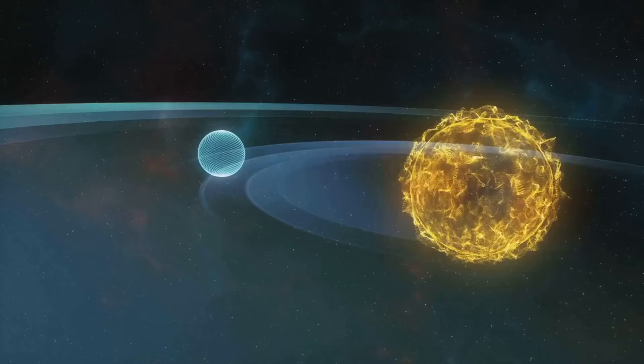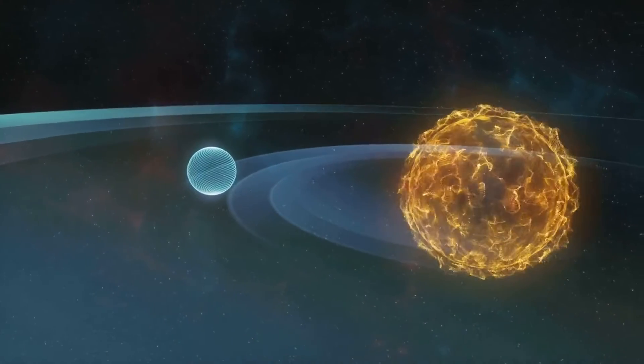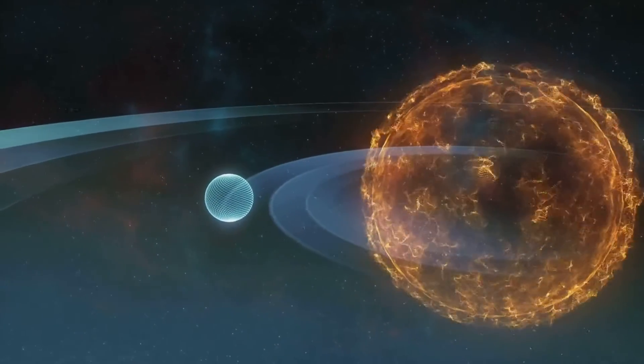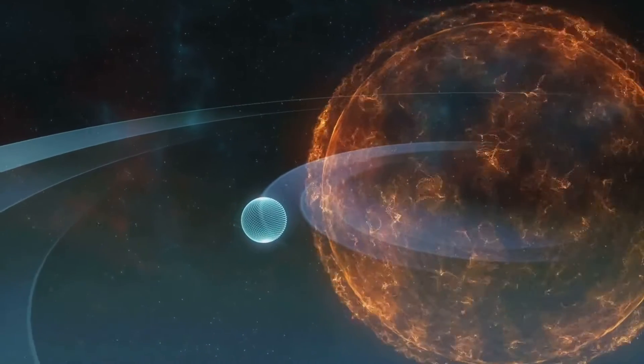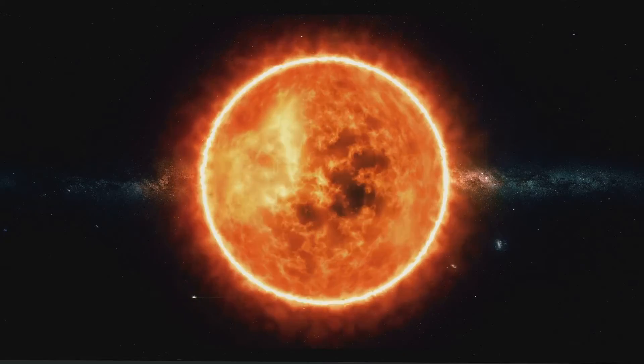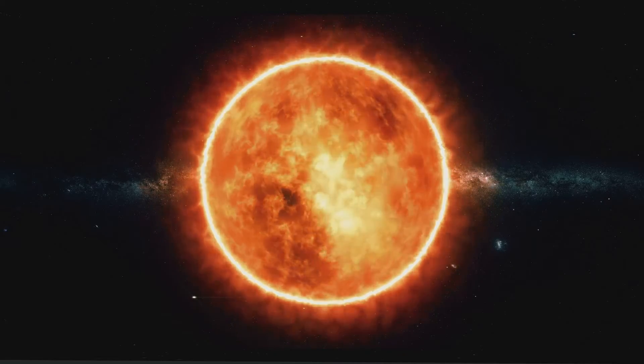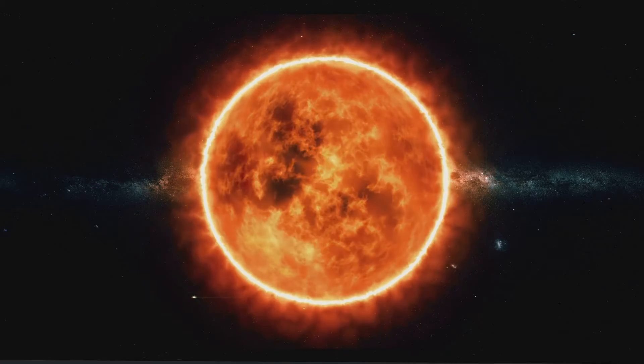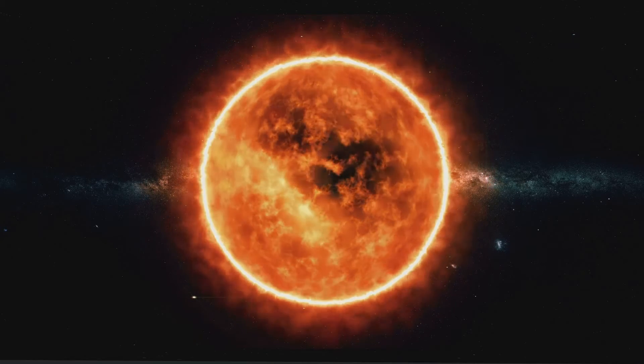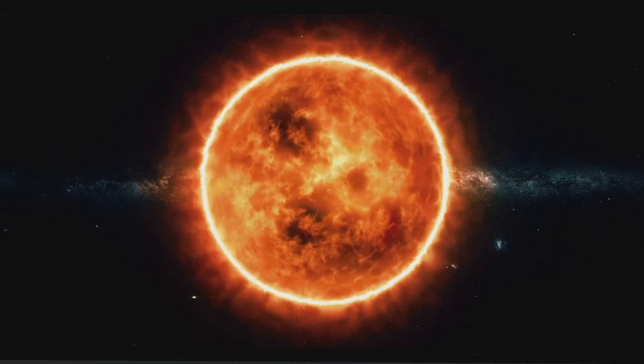Next, there's the increase in cosmic radiation. The Earth's magnetic field acts as a protective shield against the sun's harmful rays. A weakening or reversal of this field means more radiation could reach the Earth's surface, posing potential health risks for all living organisms.